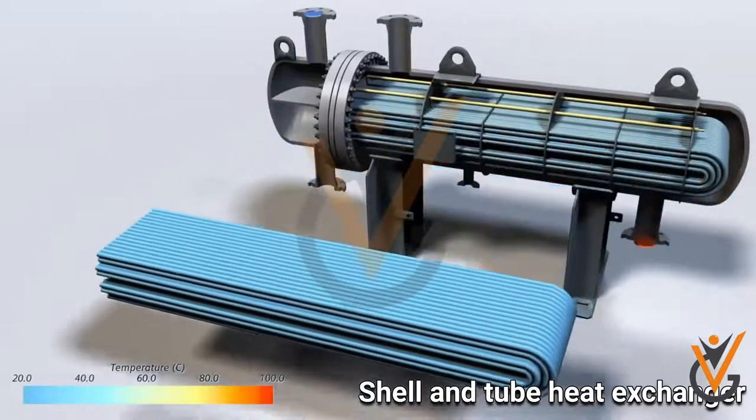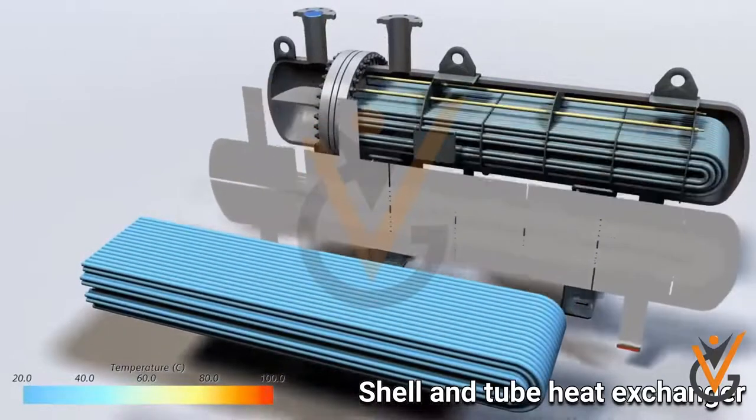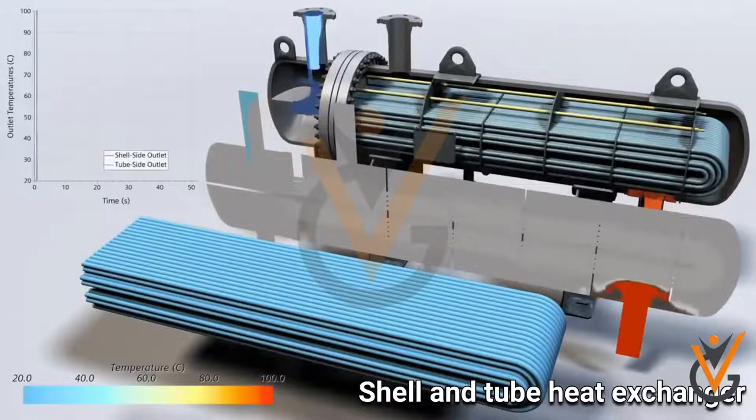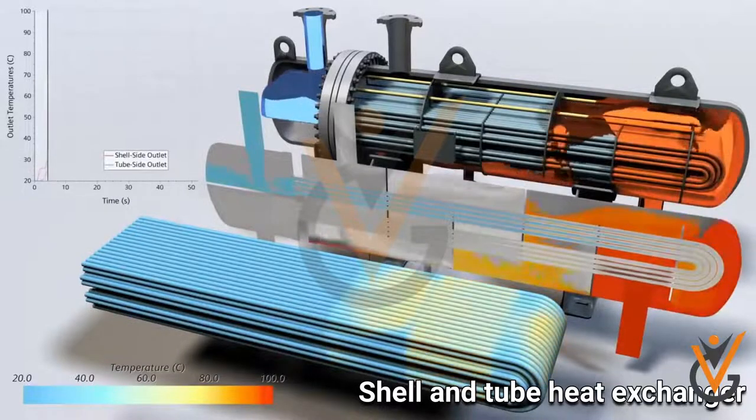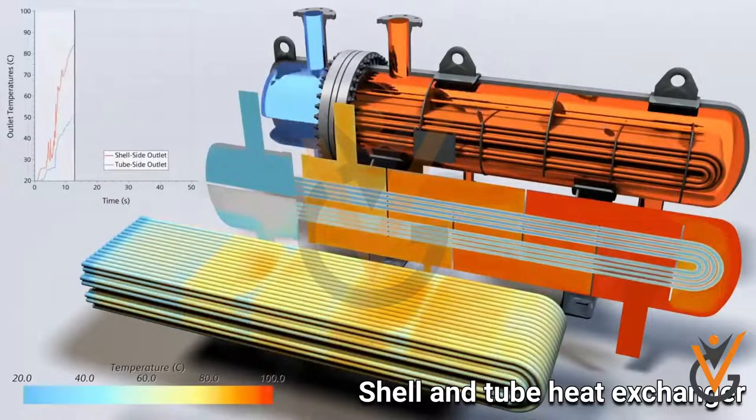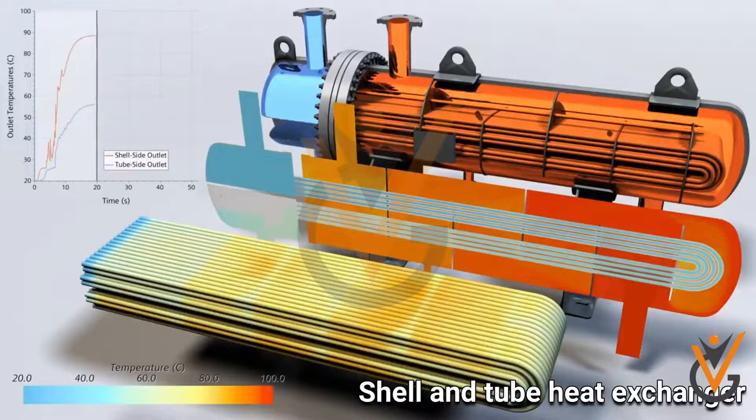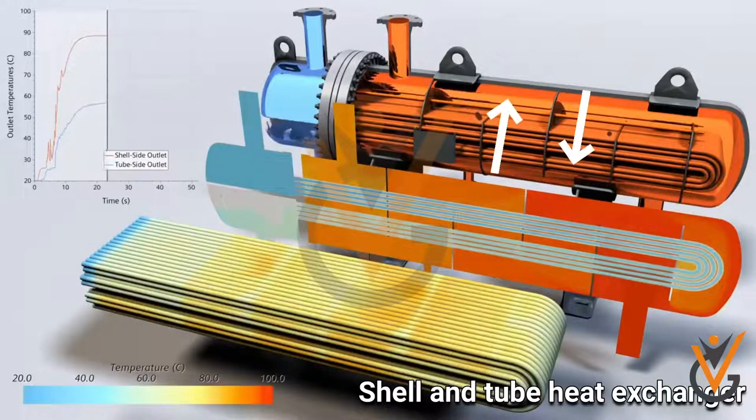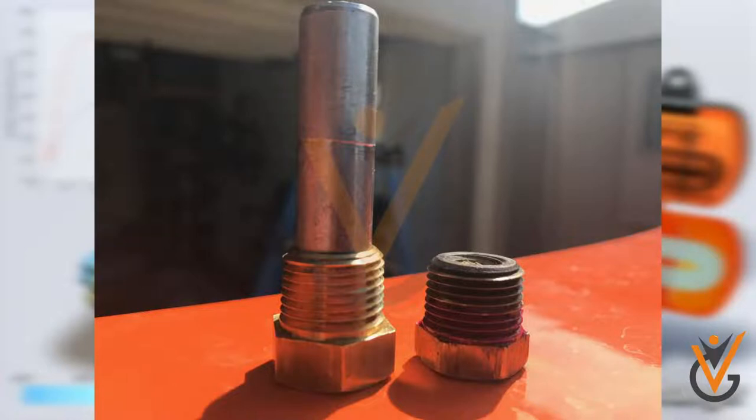One tube plate is fixed while the other is free to allow for expansion and contraction of the tube stack. Tubes pass through the baffles, which have a number of holes, providing intermediate support to the tubes. Baffles also create a mixed flow pattern for the fluid.